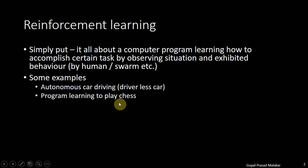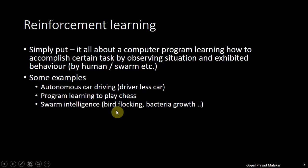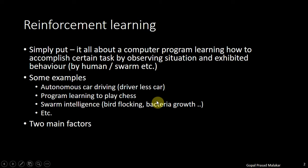Similarly, can a program learn how to play chess by observing the situation of how the opponent is playing and what behavior is being exhibited? Swarm intelligence, bird flocking, bacteria growth — there are many other areas where reinforcement learning can be applied. In all these situations, there are two things: the situation and the exhibited behavior.